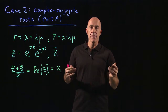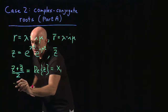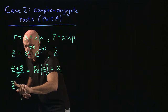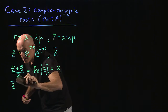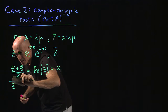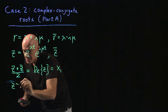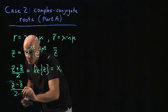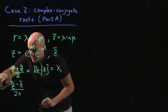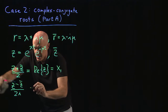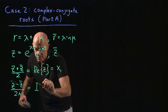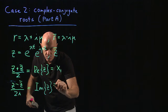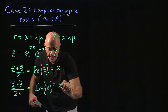How do we get the imaginary part? The imaginary part is z minus z-bar divided by 2i. That will give us the imaginary part of z, and we can call that x2.